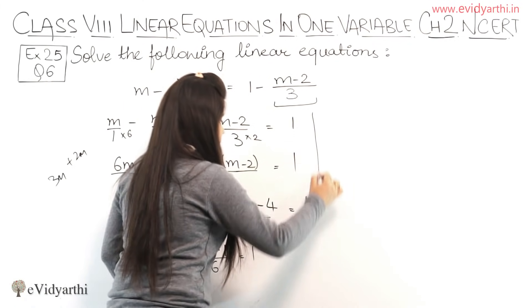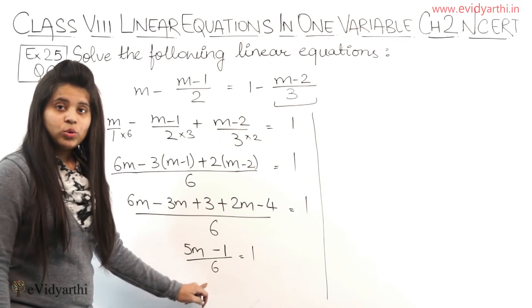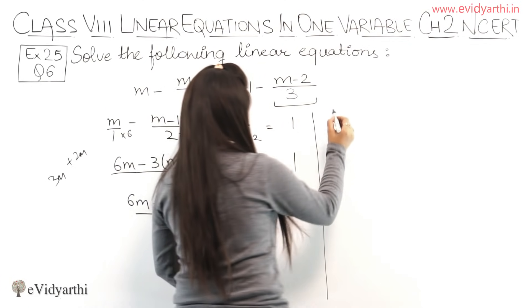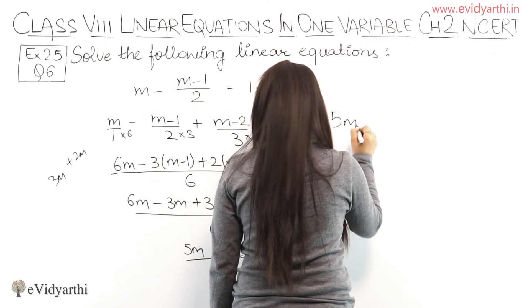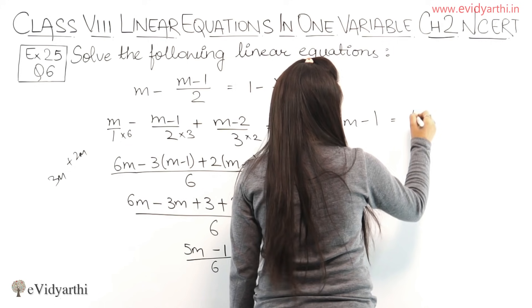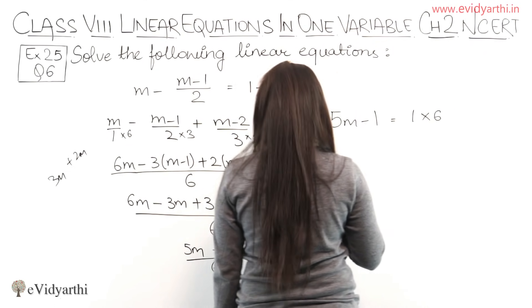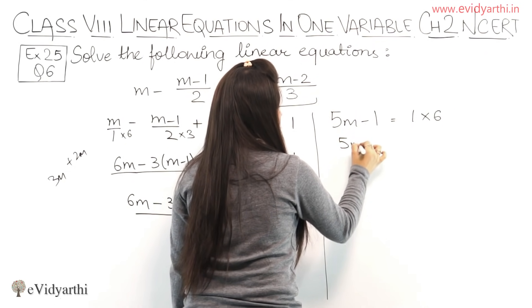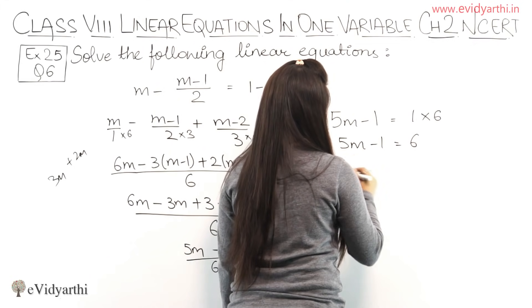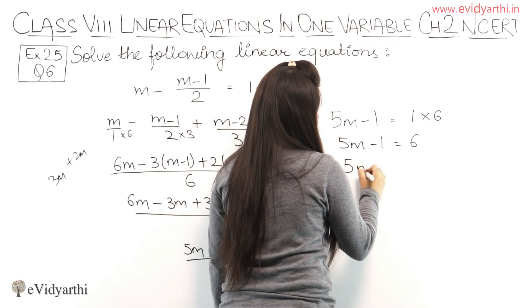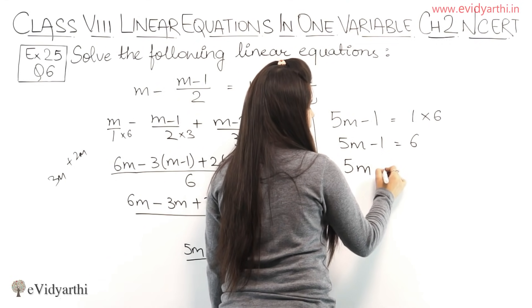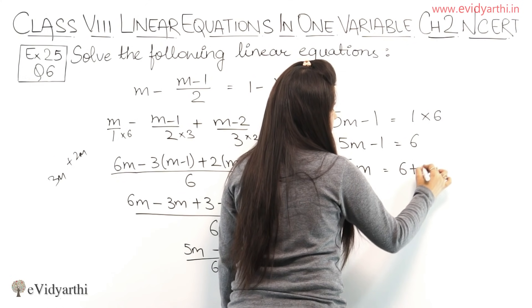Now 6 is dividing here, so it will multiply on the other side. So we'll get 5M minus 1 equals to 1 times 6. This will be 5M minus 1 equals to 6. And then moving -1 to the other side, this will be 6 plus 1.